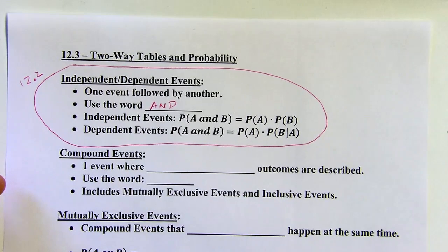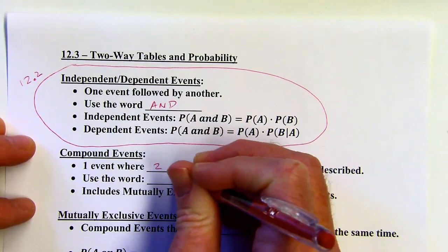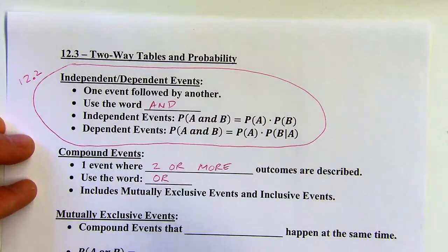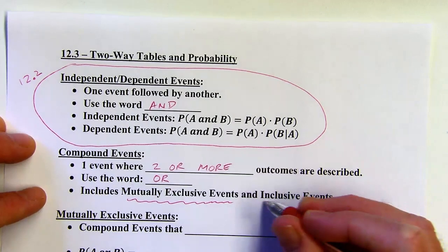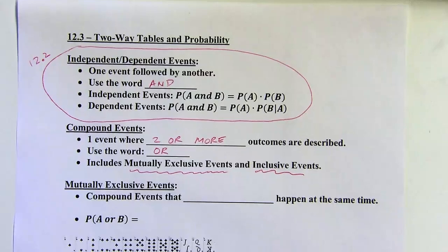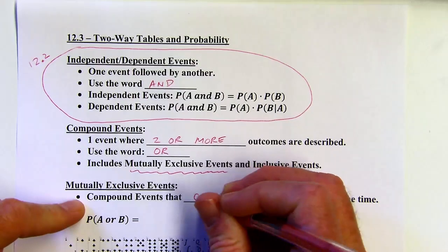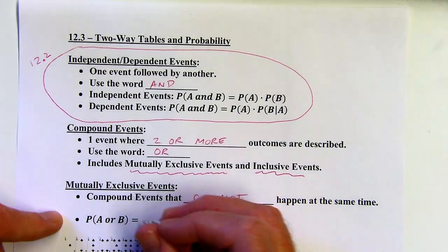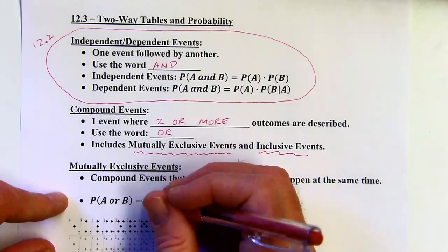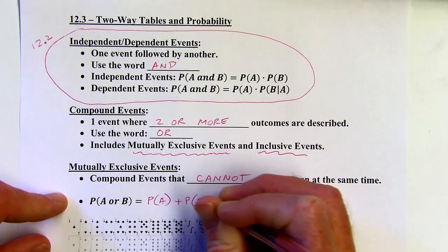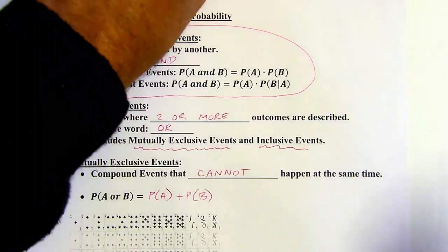Compound events are where two or more outcomes are described for one event, and they use the word 'or.' There are two types: mutually exclusive events and inclusive events. Mutually exclusive events are a bit simpler — they are compound events that cannot happen at the same time. The formula is: just add the probabilities of the two events.